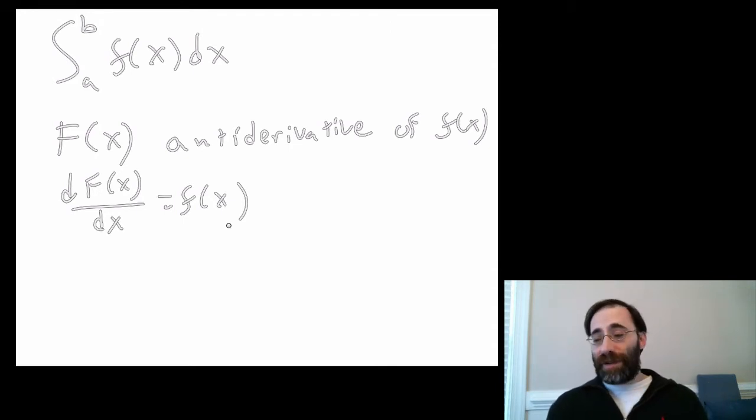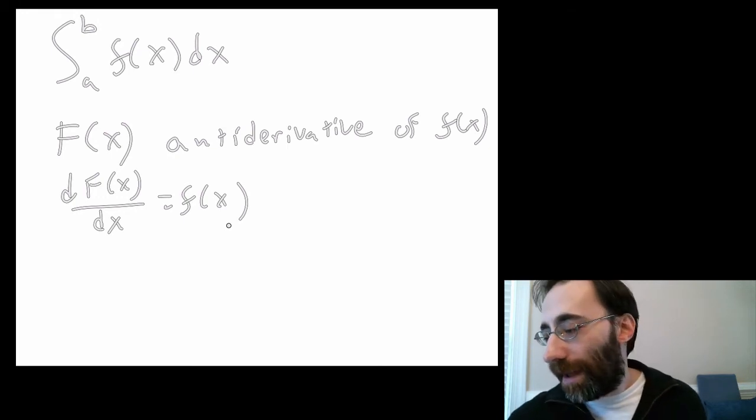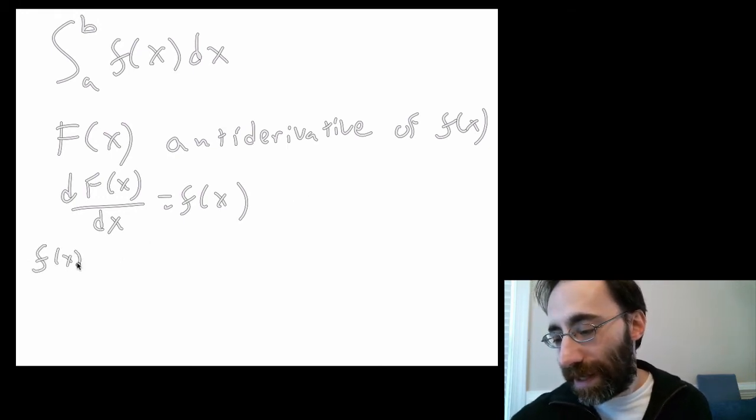So before we see how that's useful, how do we work with that? Well, we kind of guess at this point in time. So let's say we wanted to have f be 1. So it's a constant, the easiest constant you can get.